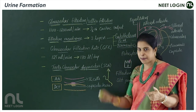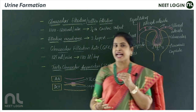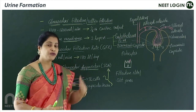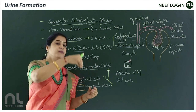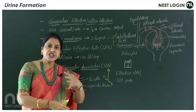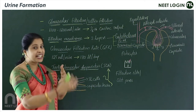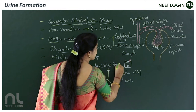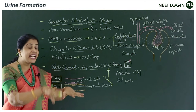The JG cells of the afferent arteriole and the macula densa of the DCT together constitute the juxtaglomerular apparatus, or JGA. The JGA becomes activated whenever the GFR becomes low — when less blood is brought to the nephron, filtration rate decreases, and the JGA gets activated, secreting an enzyme called renin to regulate the GFR.